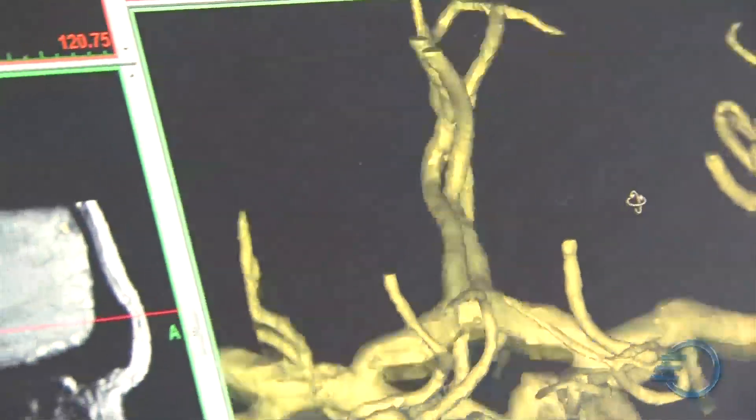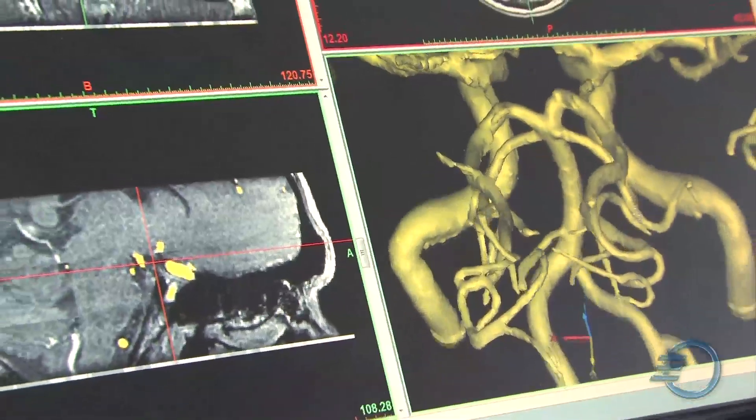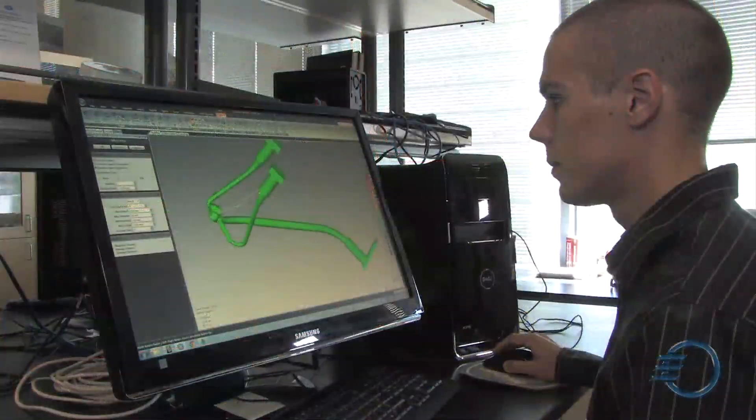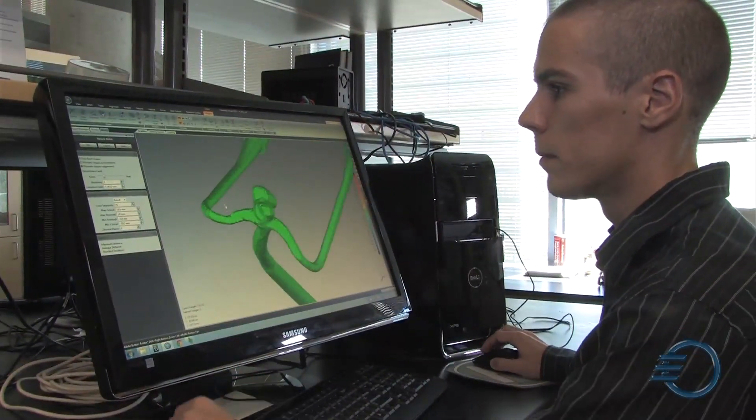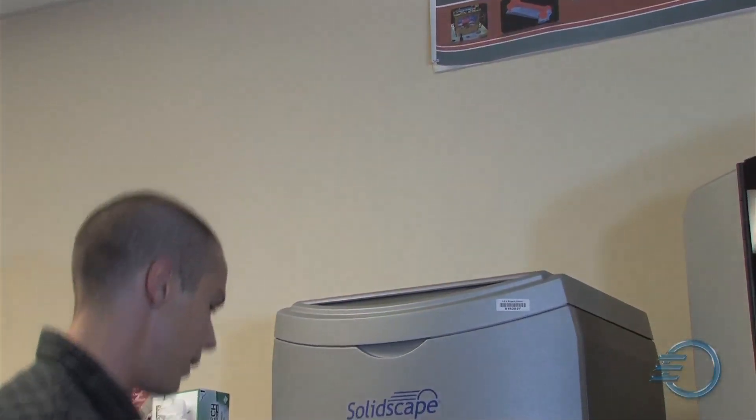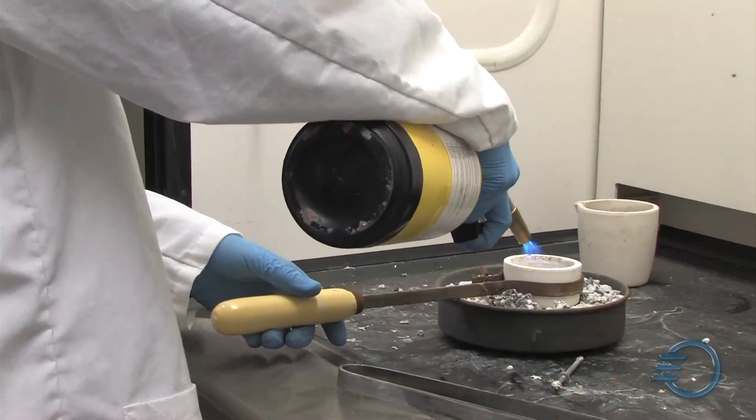This big initiative we're working on is part of the cerebral vascular modeling component. So what we need to do is we want to create models from patient data of cerebral aneurysms. And we do this through a process that involves many hospitals as collaborators, all the way to rapid prototyping using SolidScape equipment, to metal casting, and then finally urethane plastic casting.